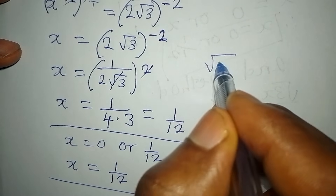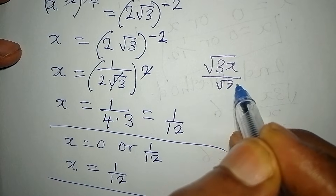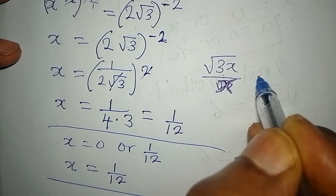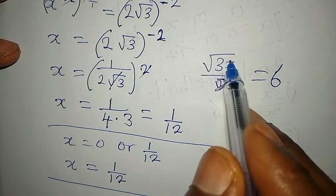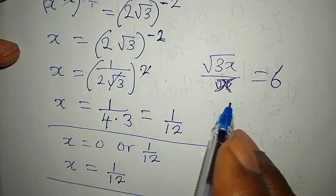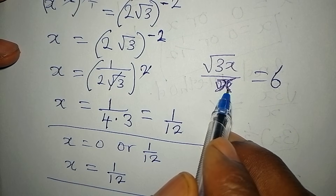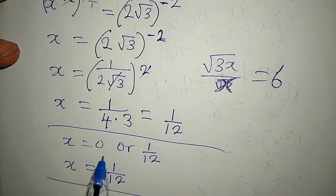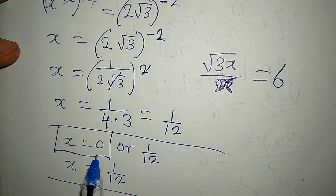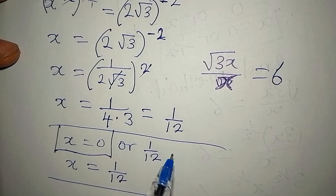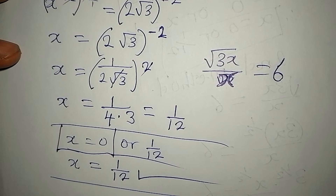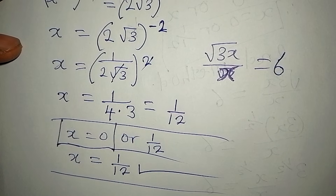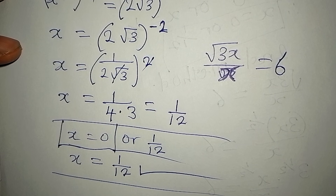Which solution is more satisfying? The original equation is square root of 3x over x equals 6. If we put x equals 0, we would be dividing by 0, which is undefined. So x equals 0 does not satisfy the equation. Only x equals 1/12 satisfies it. The second method gives only the valid solution. Thank you for watching — if you love this, subscribe to my channel for more videos like this.